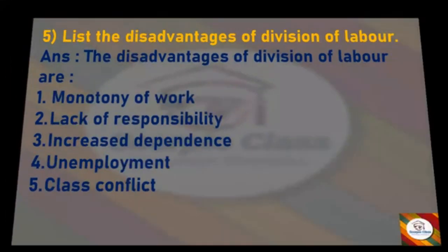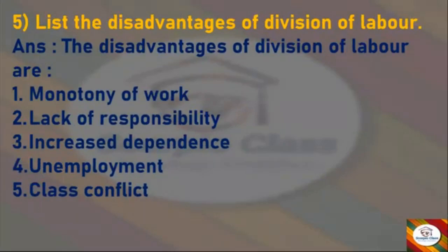Next, we have — list the disadvantages of division of labor. Answer — the disadvantages of division of labor are: monotony of work, lack of responsibility, increased dependence, unemployment, and class conflict.